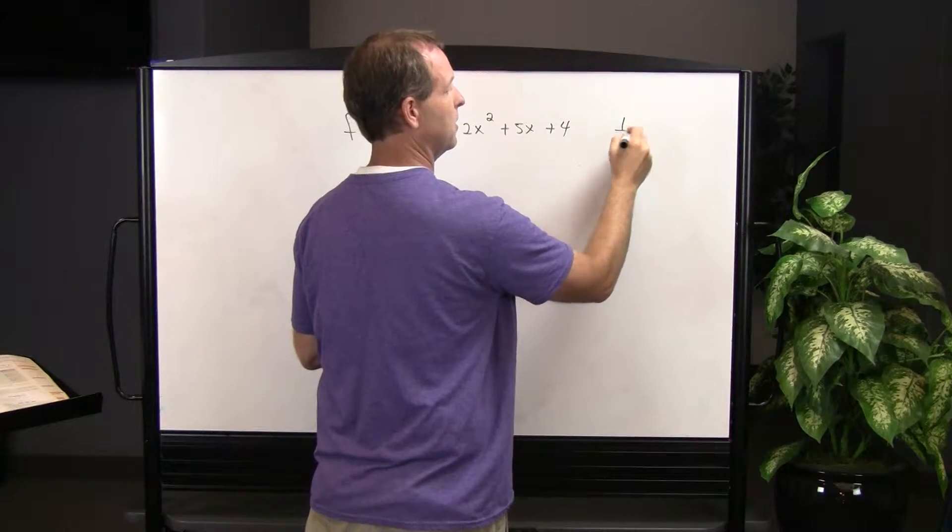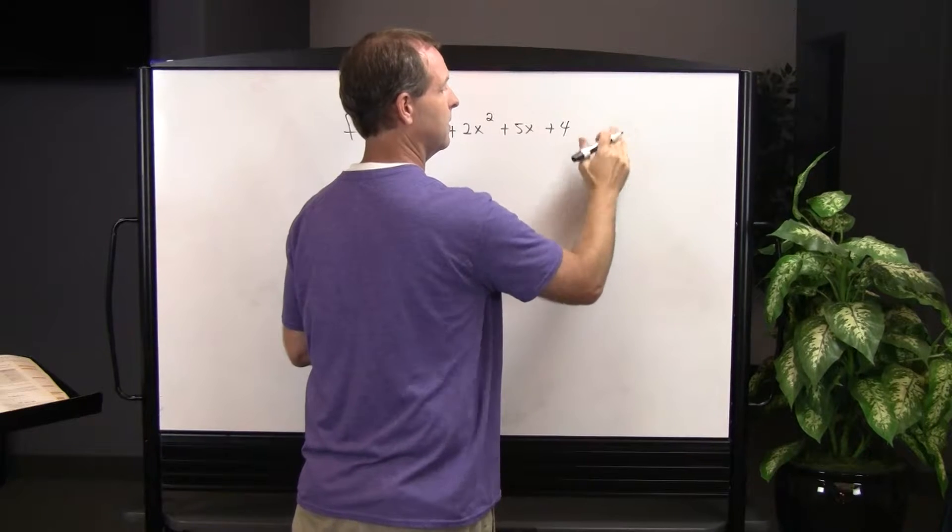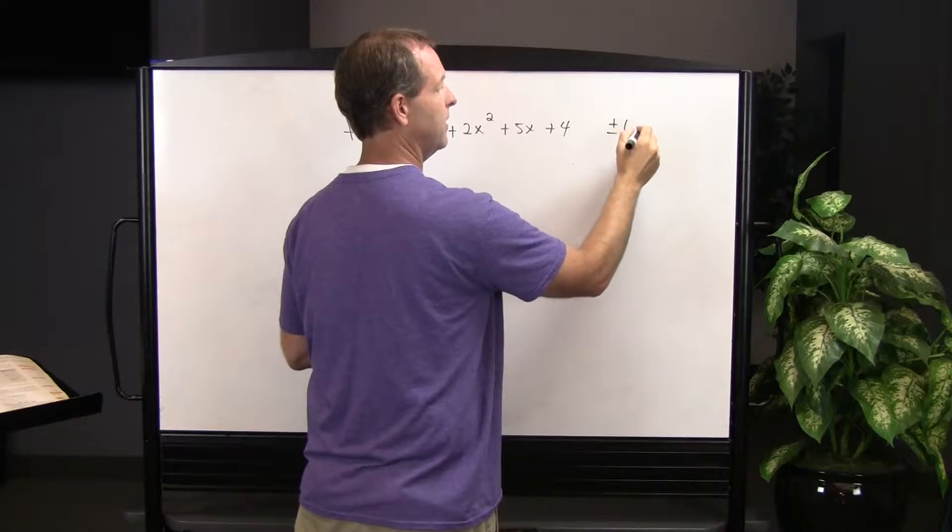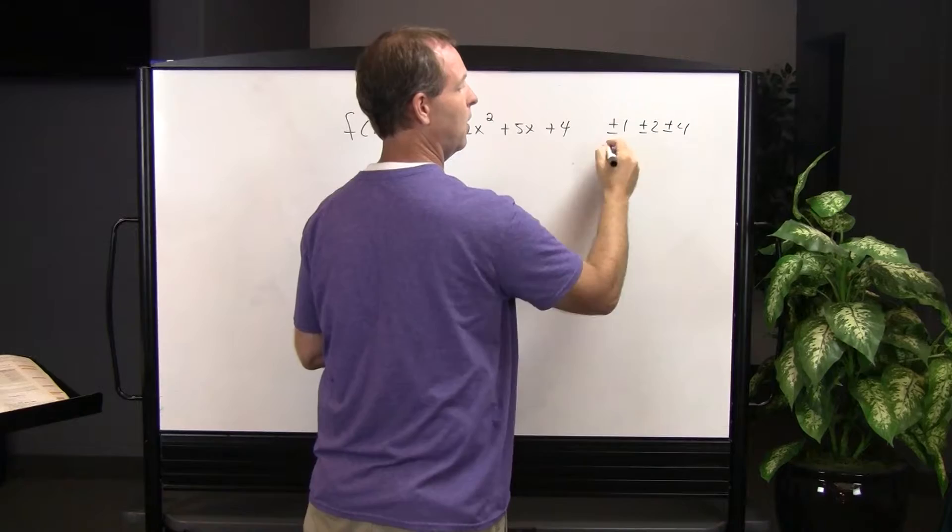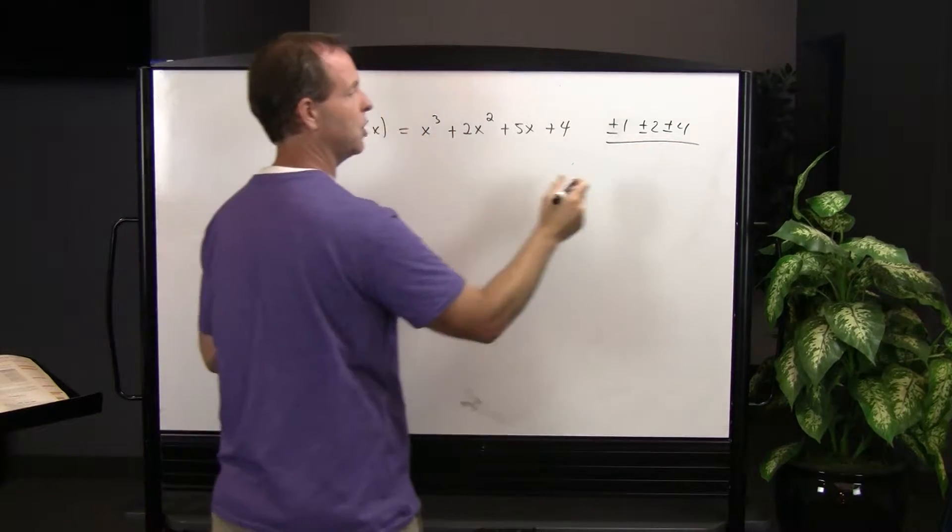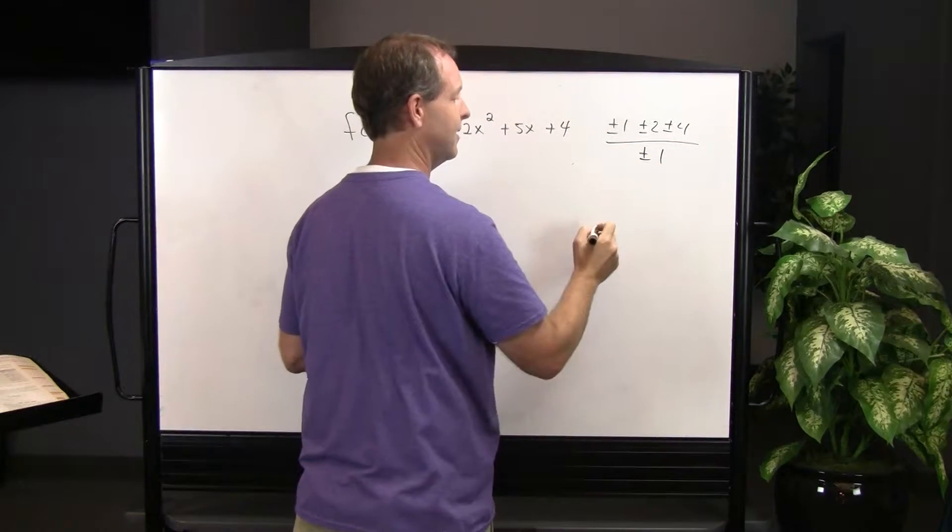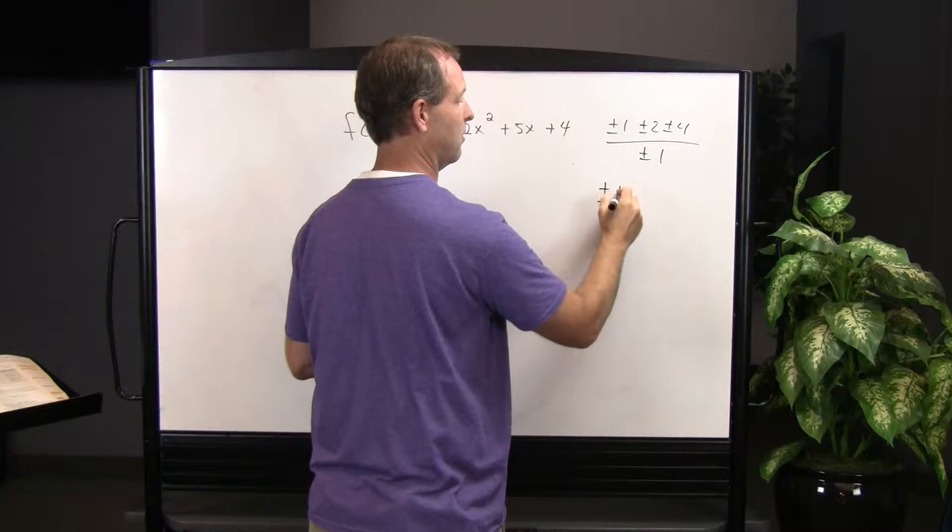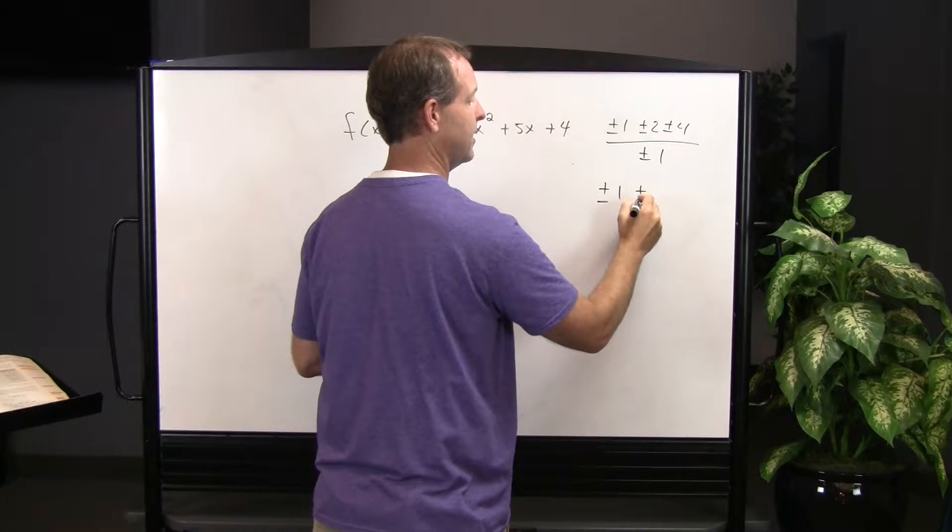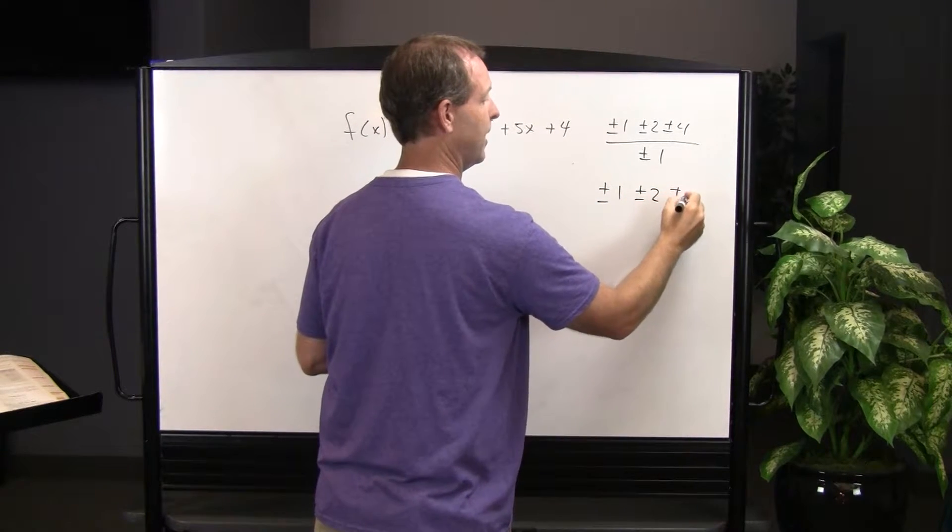All the possible solutions are plus or minus 1, plus or minus 2, plus or minus 4, all over the leading coefficient here, which is plus or minus 1. So the possibilities are plus or minus 1, plus or minus 2, plus or minus 4.